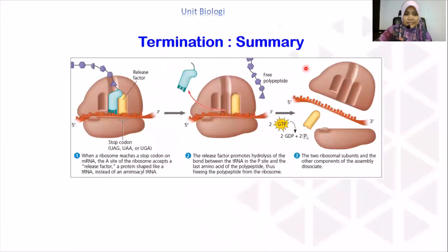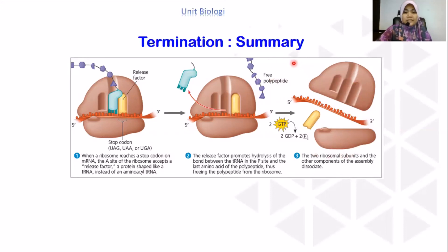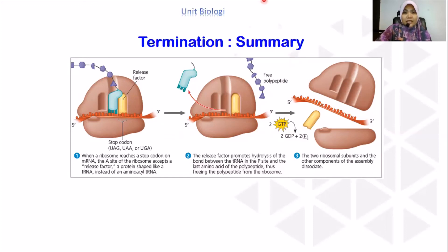Summary for termination: the A site of the ribosome reaches the stop codon; the stop codon does not code for any amino acid, so the release factor binds. When the release factor binds to the stop codon in the A site, a water molecule is added to the polypeptide chain, causing hydrolysis. The water molecule hydrolyzes the bond between the tRNA and the polypeptide at the P side. The polypeptide chain is released and the ribosomal subunits dissociate. That's about the termination stage. We have now completed explaining translation, which has three stages: initiation, elongation, and termination.